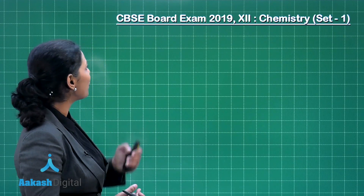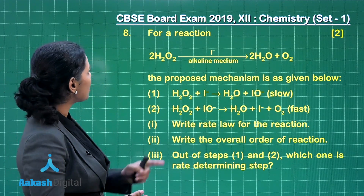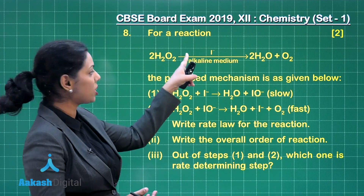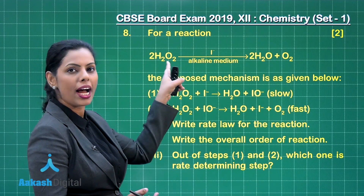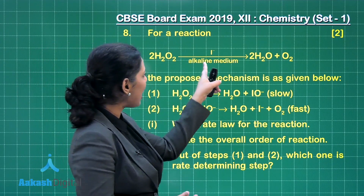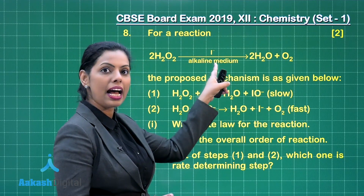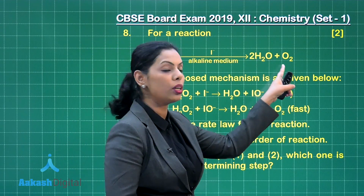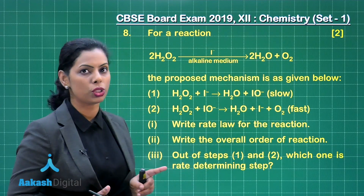Here is question number 8. In this question it is given for a reaction: H₂O₂ (hydrogen peroxide) in alkaline medium in the presence of iodide ion gets changed into H₂O and O₂. So this is the decomposition of H₂O₂.